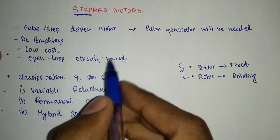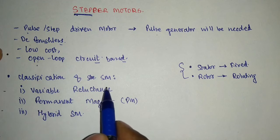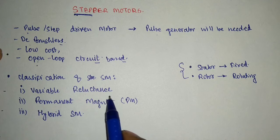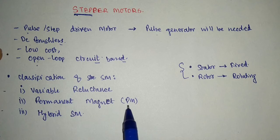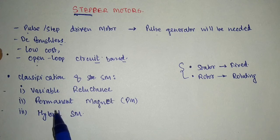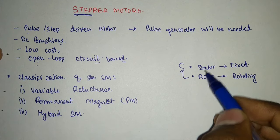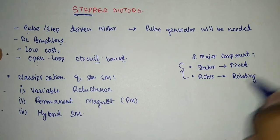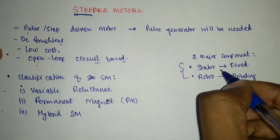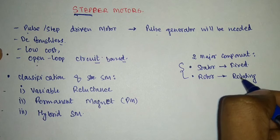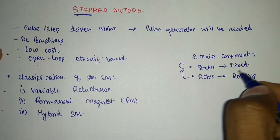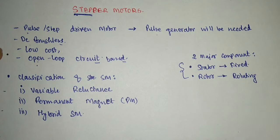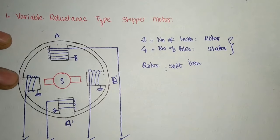Stepper motors are based on open loop. The classification of a stepper motor falls into three broad categories: variable reluctance type, permanent magnet type, and hybrid stepper motor. These classifications are based on the rotor type only. In any motor we have two major components — the stator, which is the stationary or fixed part, and the rotor, which is the rotating part. The stator has certain windings carrying current and generating magnetism, which in turn attracts the teeth or poles of the rotor.